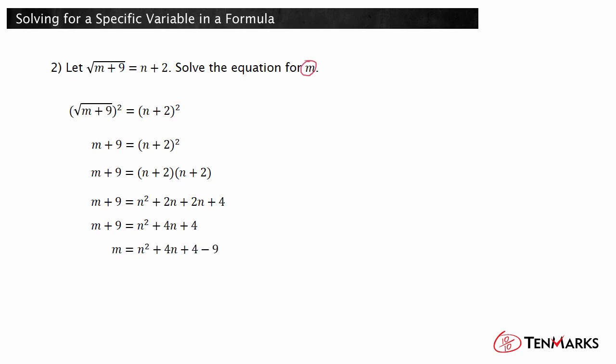Finally, subtract 9 from both sides of the equation to solve for m. So m is equal to n squared plus 4n minus 5.